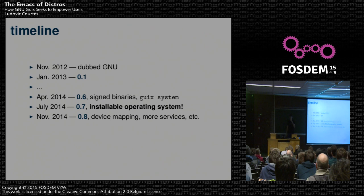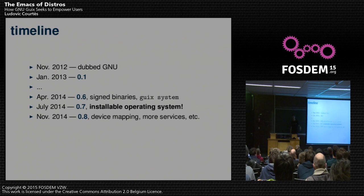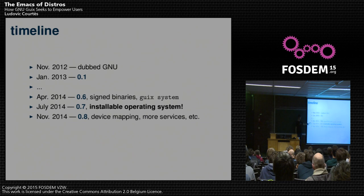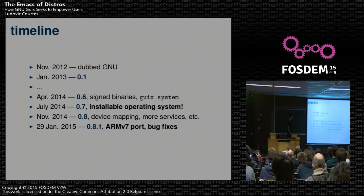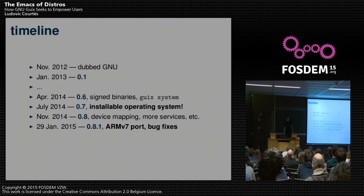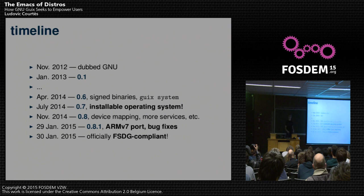So what's the status of the project? It's a pretty young project. It started off Nix — I've been working on NixOS for four years before, and started working on Geeks about two years ago. It entered the GNU project in 2012, and then we had a number of milestones. The first time we had an actual installable operating system was recently this summer. The last release was actually two days ago. Another fabulous hacker ported Geeks to ARMv7, so we now have an ARMv7 port, along with lots of bug fixes. And one day ago, Geeks was officially recognized by the FSF as FSDG-compliant — compliant with the Free System Distribution Guidelines.